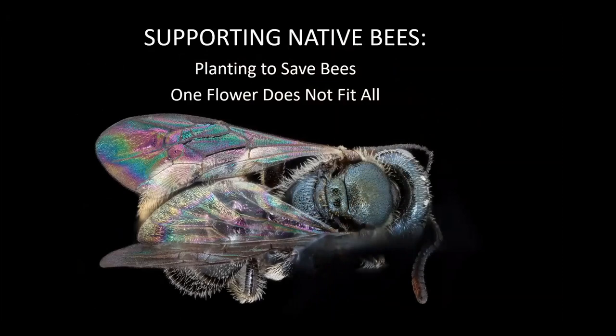Getting into some details about how your plantings or what you encourage to grow is going to support native bees. There's a notion I want to return to: flowers are complicated in terms of their support systems for different species of bees. You can't check the box — like now we've helped everything in the bee world by planting a set of flowers that attract bees. It's more complex, just as we can't save birds by setting up bird feeders.